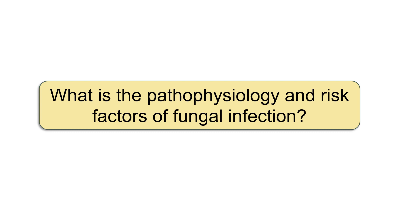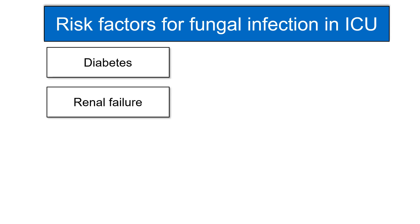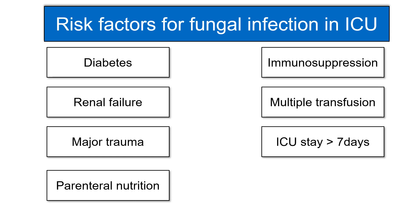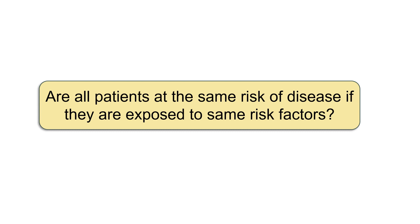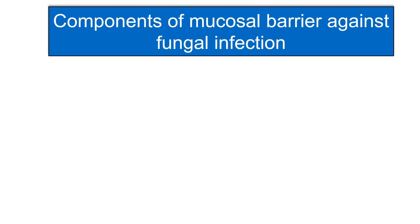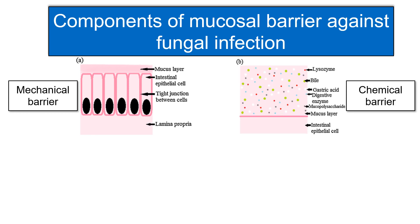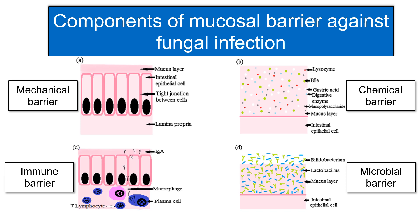Regarding pathophysiology and risk factors: many risk factors exist for fungal infection in the ICU, including diabetes, renal failure, major trauma, parenteral nutrition, immunosuppression, multiple transfusions, ICU stay more than 7 days, and vascular catheter. There are four components of the mucosal barrier against fungal infection: the mechanical barrier (intact mucosal layer), the chemical barrier (gastric acid, digestive enzymes), the immune barrier (macrophages and dendritic cells), and the microbial barrier (commensal bacteria like Lactobacillus).